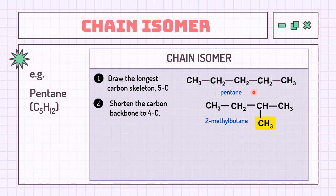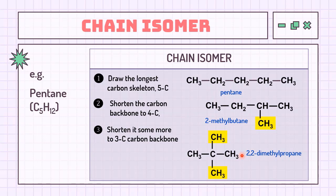If there is possibility to further shorten the carbon backbone, then shorten it. Pentane with 5 carbons can be shortened until 3 carbons, so we're going to have two branches located at the 2nd carbon. Therefore, 2,2-dimethylpropane is a chain isomer to pentane, as well as to 2-methylbutane.